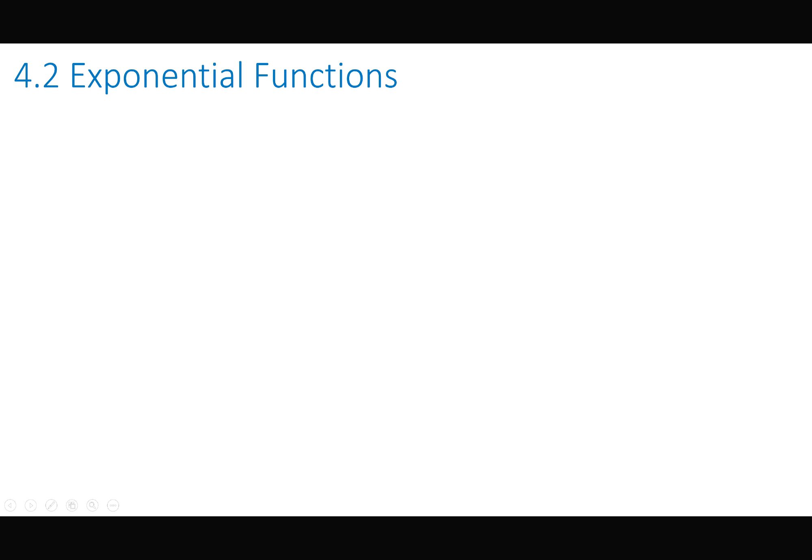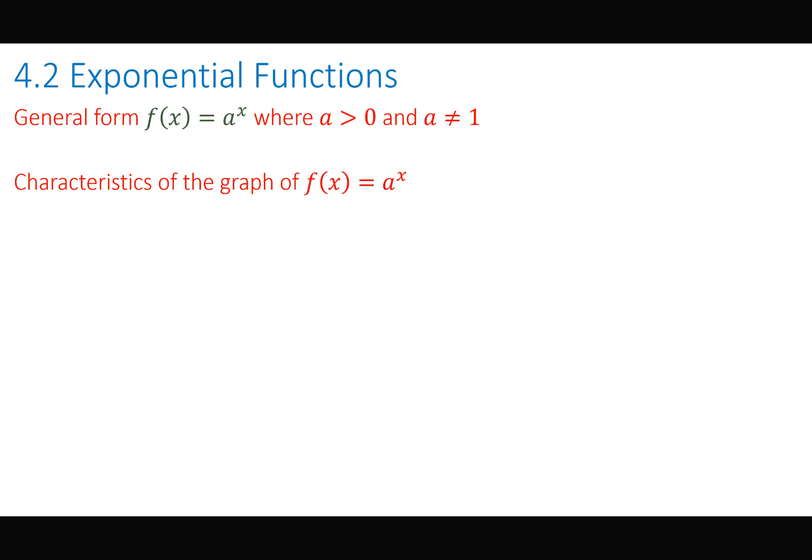The general form of an exponential function is a raised to the x power, where a is some number. We look at cases where a is greater than zero and a is not equal to one, because one raised to any power is still one. For example, one half raised to the x will change based on x, but one raised to any power stays one.